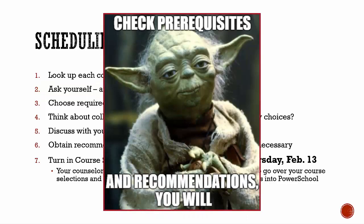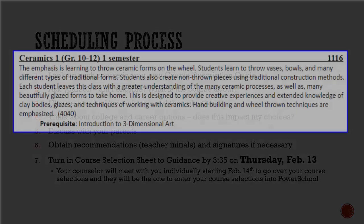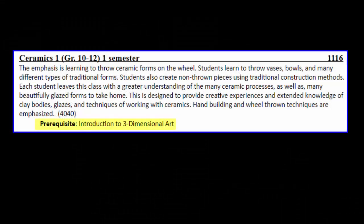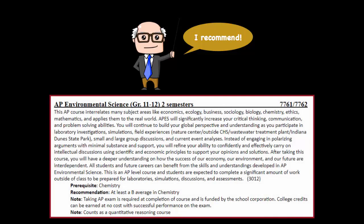Two other things to keep in mind when picking courses are prerequisites and recommendations. Prerequisites are denoted with an asterisk, meaning there are classes or requirements you must have completed before you can take a class. For example, to take Ceramics 1, you have to have already taken Intro to 3D Art. Recommendations are suggestions so you can be successful in classes. For example, to take AP Environmental Science, it is recommended that students have a B or better in chemistry.